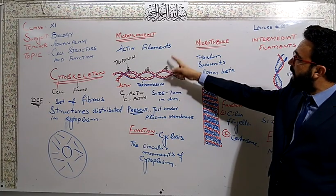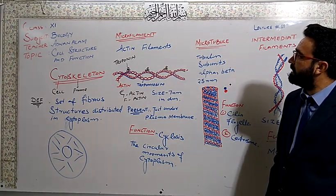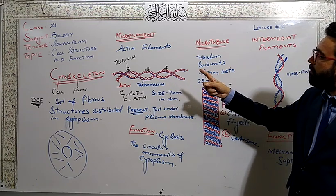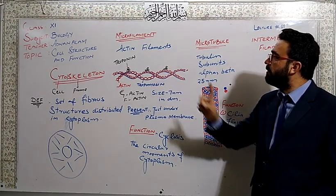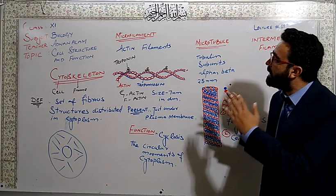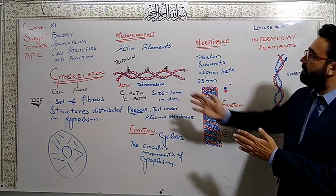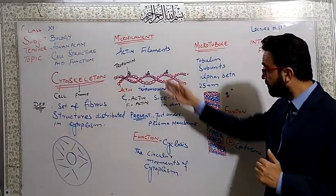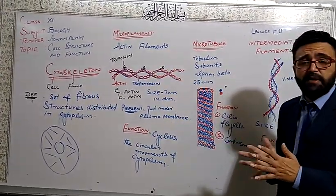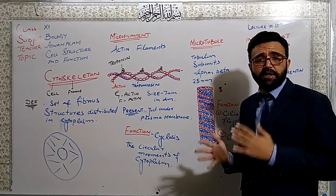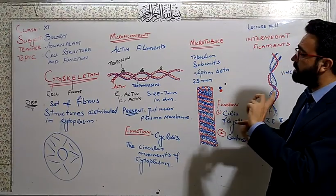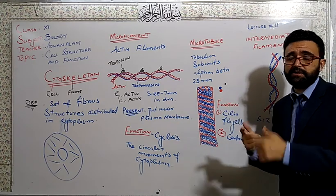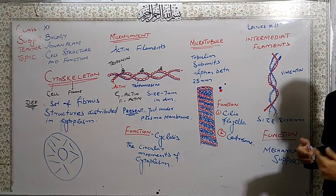Along with that we have tropomyosin. Upon the actin subunits there is another triplet type of structures present - three subunits which are troponin. The size is seven nanometers in diameter. They are present just below the plasma membrane and its function is they have the ability of contraction and relaxation. So cyclosis, which is the movement of cytoplasm, the streaming movement.